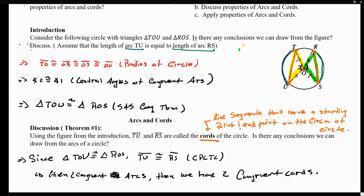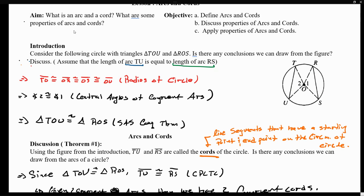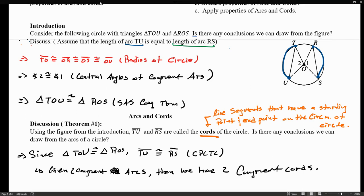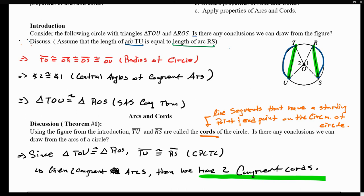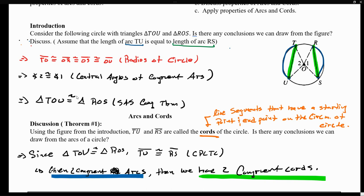This is a very important idea to understand. In any circle, if you have been given two congruent arcs — just as stated, if arc TU is congruent to arc RS — then we can say that the two corresponding chords, TU and RS, are congruent. Given two congruent arcs, we can conclude that we have two congruent chords. This is a theorem we will not prove, but it is important to understand.